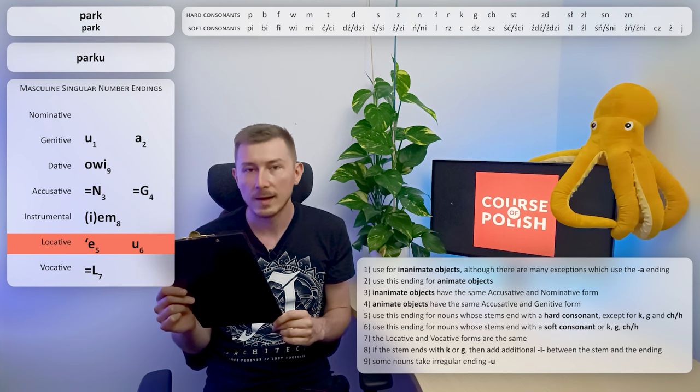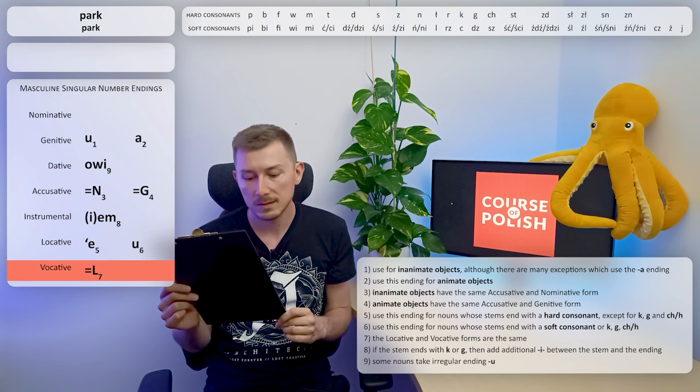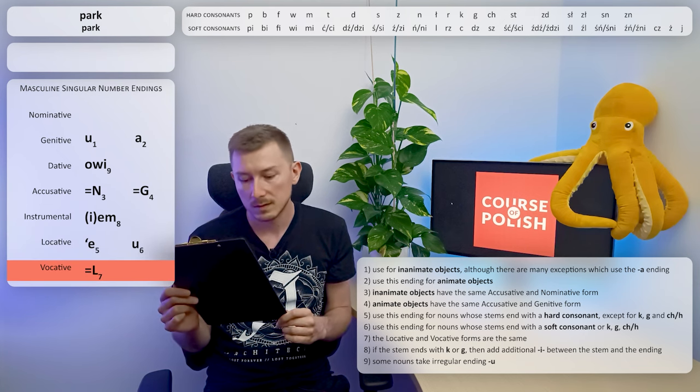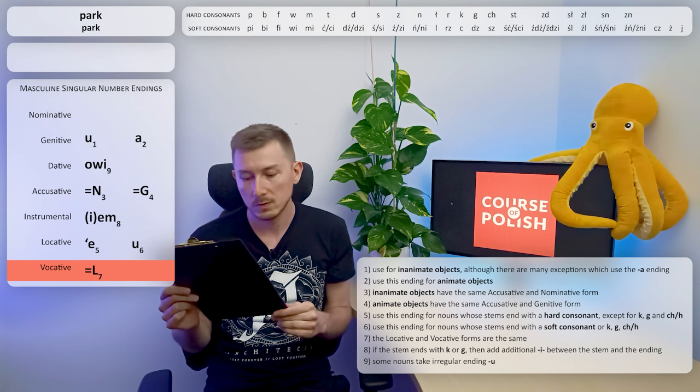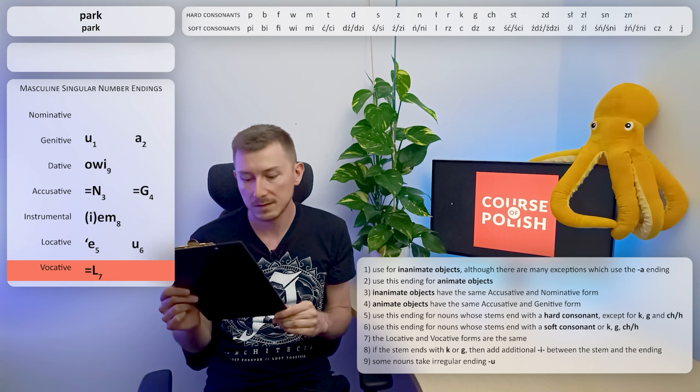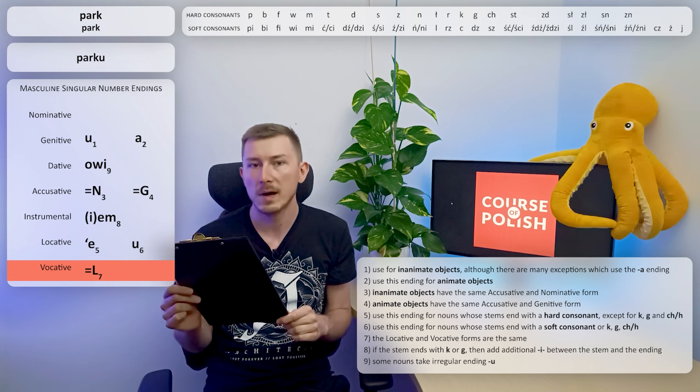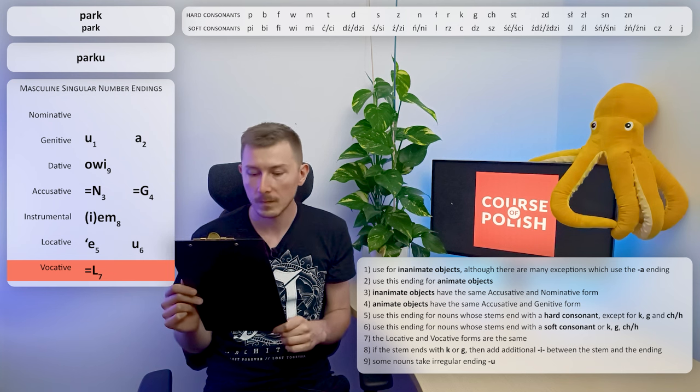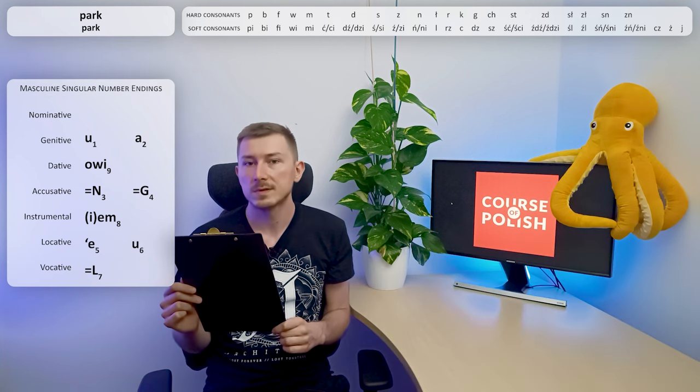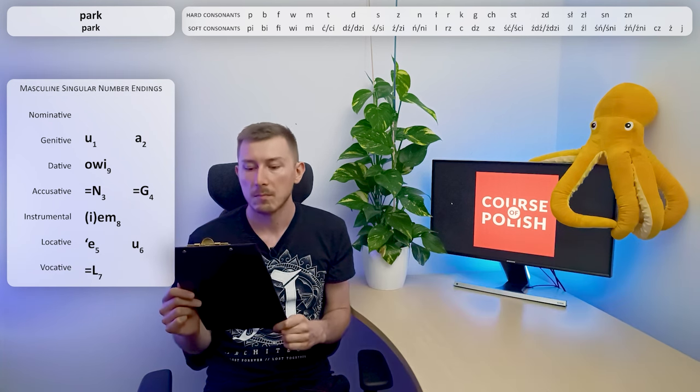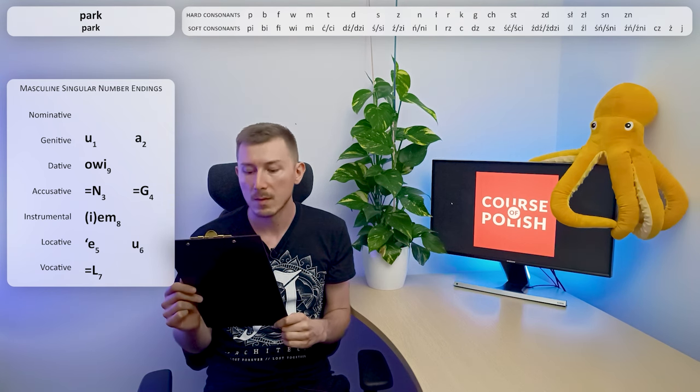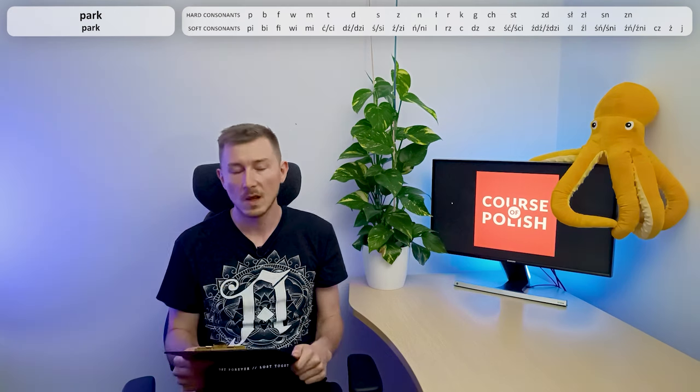And the last case in singular number, vocative. It's easy. It says that we should use the same form as in locative case. So again it will be PARKU. So all the forms for singular number are: PARK, PARKU, PARKOWI, PARK, PARKIEM, PARKU, PARKU.